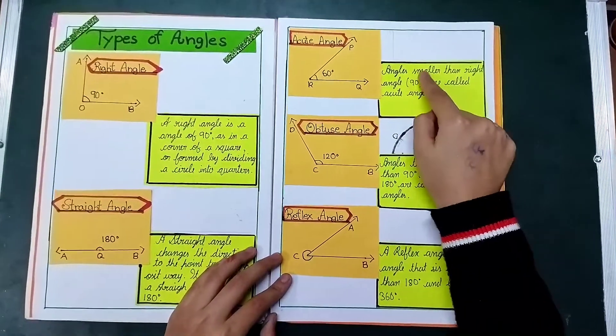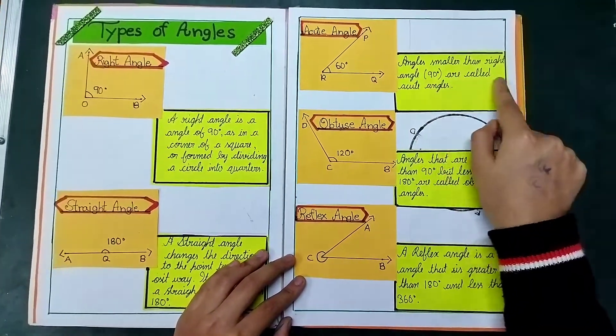Now acute angle. Here is the definition: Angles smaller than a right angle are called acute angles.